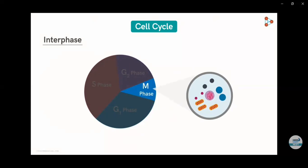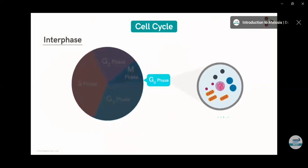M phase could be mitosis or meiosis. It occurs in germ cells and somatic cells. If it will be in somatic cells, definitely it will be mitosis, and if it will be in germ cells, definitely it will be meiosis.